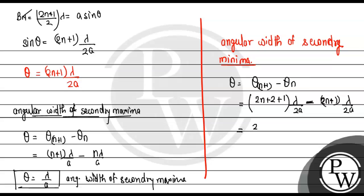So this will be (2n+3) lambda upon 2a minus (2n+1) lambda upon 2a. This equals 2 lambda upon 2a, which simplifies to lambda upon a.